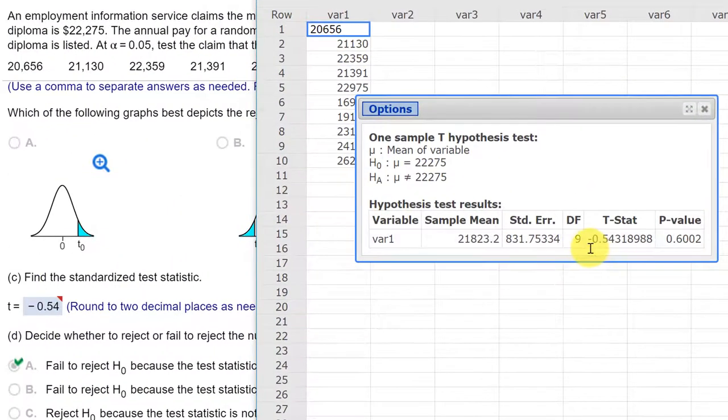There is our t test statistic minus 0.54, which is what we have there. Now again, this problem wanted you to use the critical values, but StatCrunch gives you the p-value, which is 0.6.